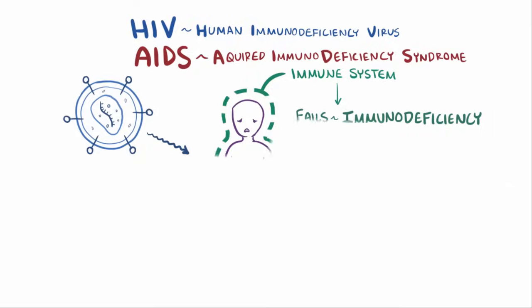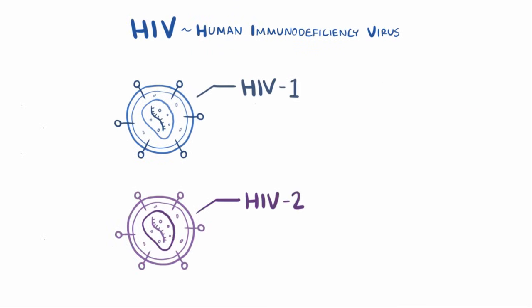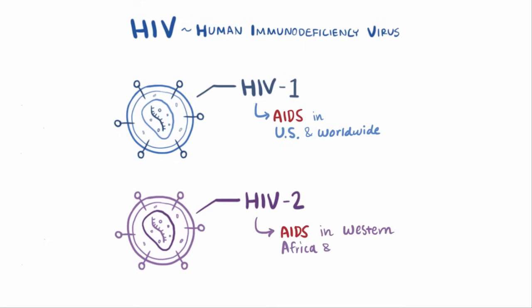There are two distinct types of HIV: HIV-1 and HIV-2. HIV-1 is more commonly associated with AIDS in the US and worldwide. HIV-2 is more rare and typically restricted to areas in western Africa and southern Asia. HIV-2 is so uncommon that HIV almost always refers to HIV-1.